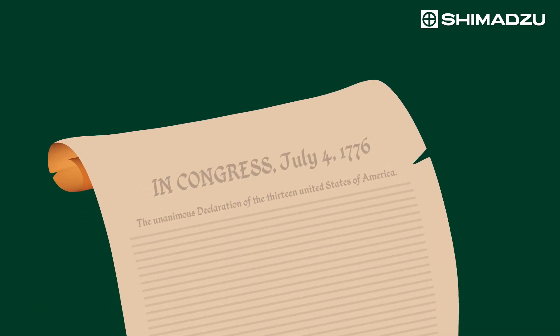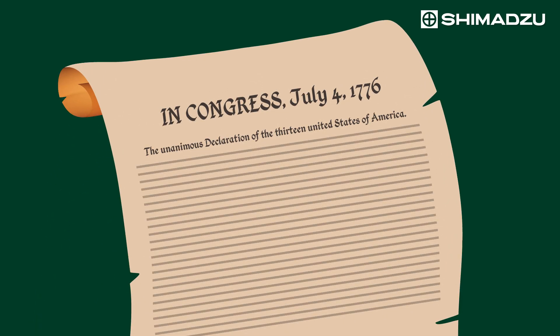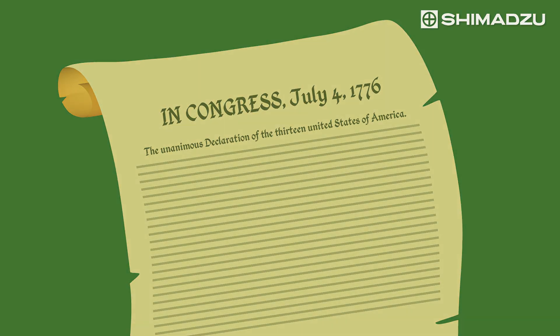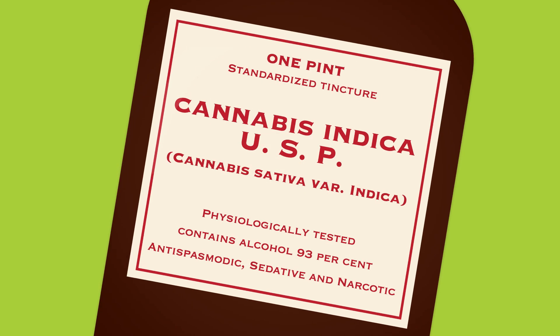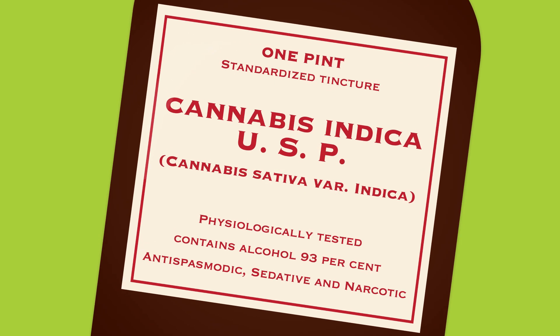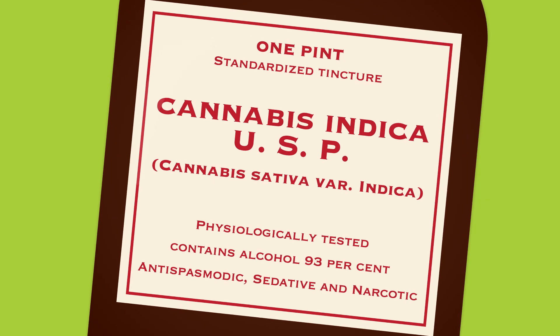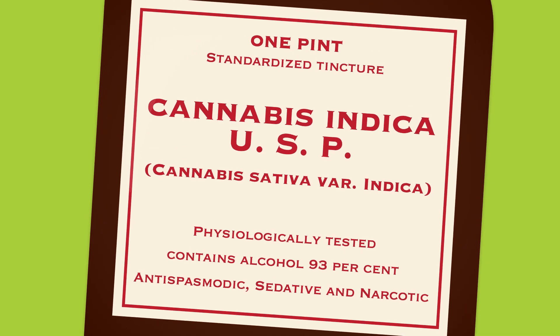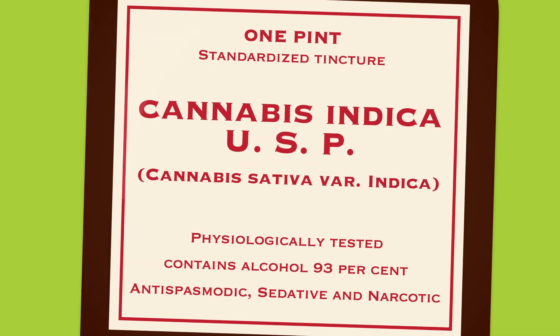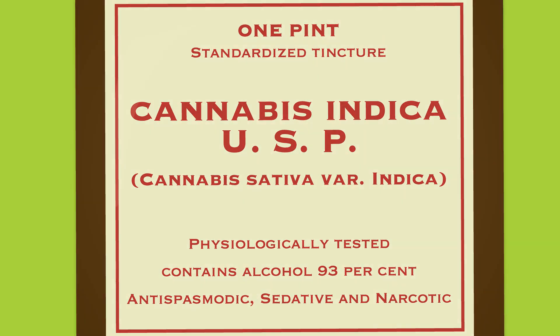In fact, the early drafts of the Declaration of Independence were written on hemp paper. Up until the 1930s, cannabis oil was commonly used in the U.S. to treat many different ailments.